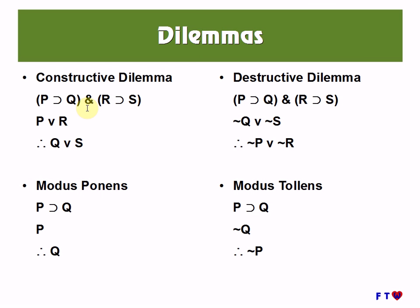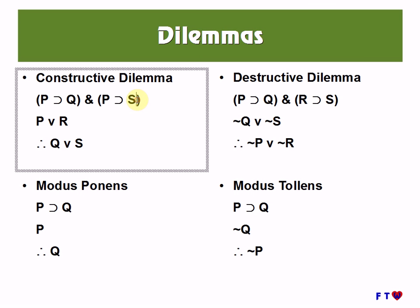With modus ponens, we have a single conditional and we're affirming its antecedent and concluding its consequent. With constructive dilemma, we have a conjunction of conditionals — we're affirming that one of the antecedents is true and concluding that one of the consequents is true. If we were to make both conditionals the same — changing R to P and S to Q — then this constructive dilemma is also modus ponens. The extra lines become redundant because the disjunction of P is equivalent to P, and the disjunction of Q is equivalent to Q. This shows that constructive dilemma is like an extended form of modus ponens.